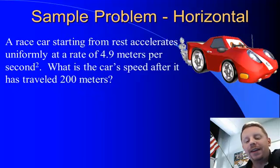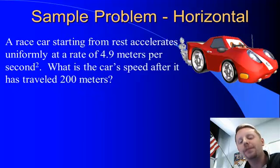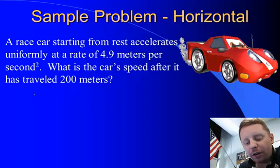Our first sample problem has a race car starting from rest and it accelerates uniformly at a rate of 4.9 meters per second squared. What's the car's speed after it has traveled 200 meters? Well, of course, this is a horizontal motion problem.